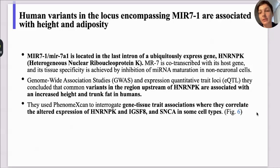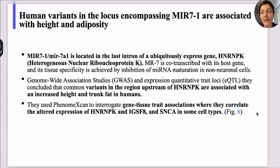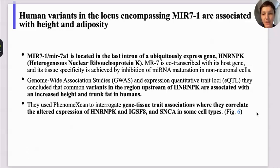Another result is that human variants in the locus encompassing microRNA-7 are associated with high adiposity. MicroRNA-7 is located in the last intron of the ubiquitously expressed heterogeneous nuclear ribonucleoprotein K and is co-transcribed with its host gene. Through genome-wide association studies, variants in the region upstream of ribonucleoprotein K are associated with increased height and trunk fat in humans. Using PhenoScanner, they correlated altered expression of ribonucleoprotein K, IGSF8, and alpha-synuclein in specific cell types with these traits.